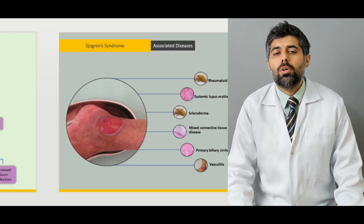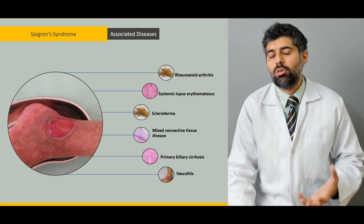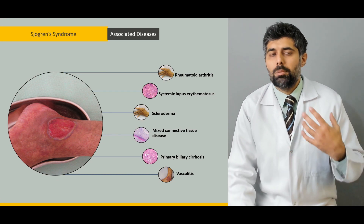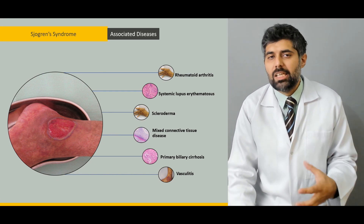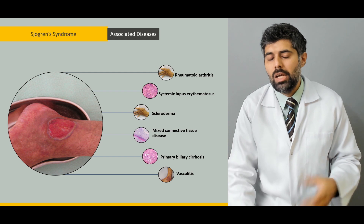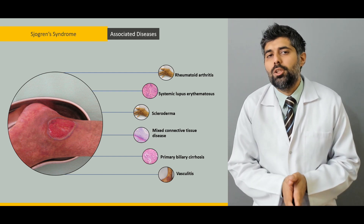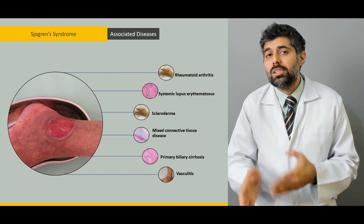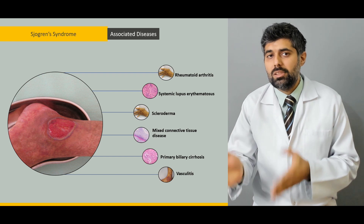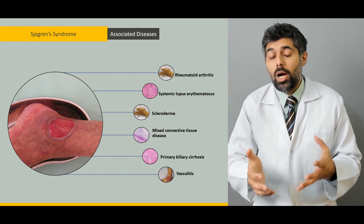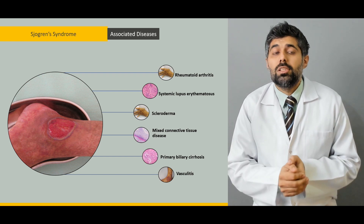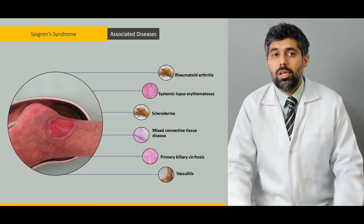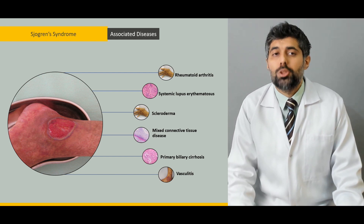We're going to study about the Chagrin Syndrome as both the primary Chagrin and secondary Chagrin, and how secondary Chagrin Syndrome is associated with various other diseases, and why those diseases are autoimmune and why they are related to the Chagrin.